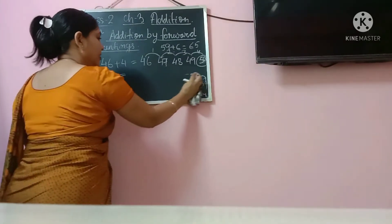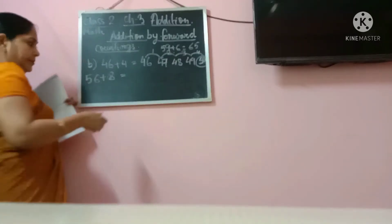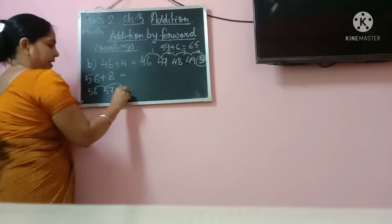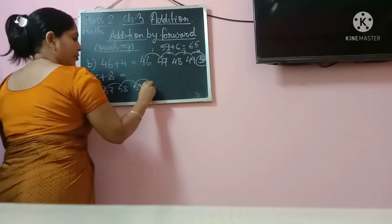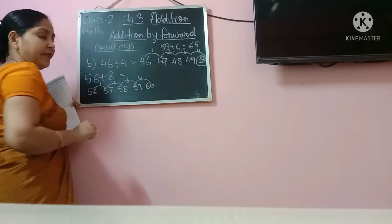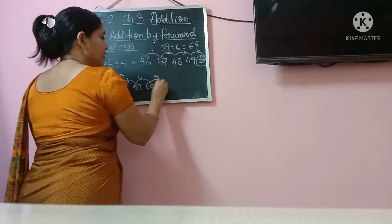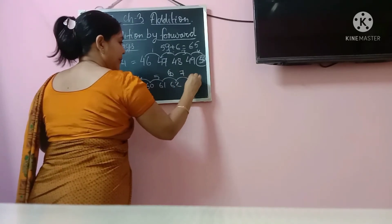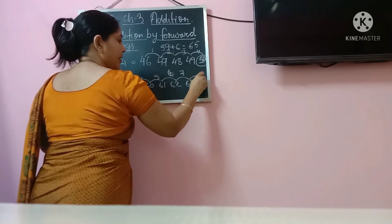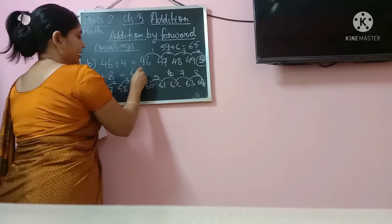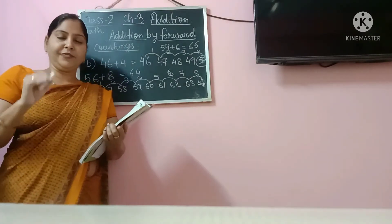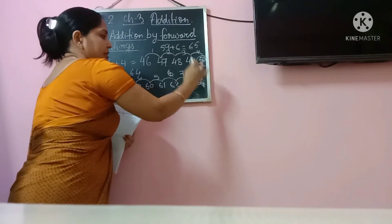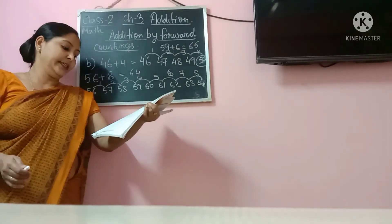Let me do it again so it is clearly visible. So we are starting from 56. First step is 57, second step 58, third step 59, fourth step 60, fifth step 61, sixth step 62, seventh step 63, and eighth step 64. So the final answer is 64. When the dog starts running from 56, after eight steps it will reach 64.